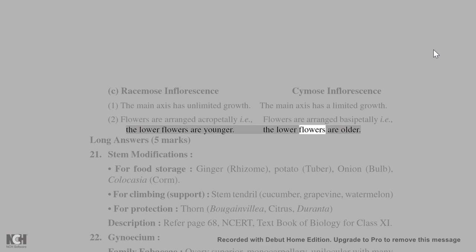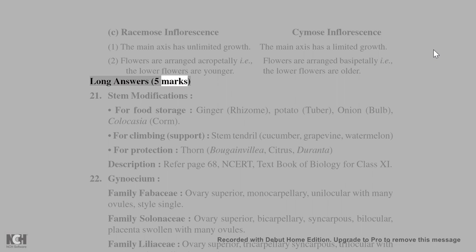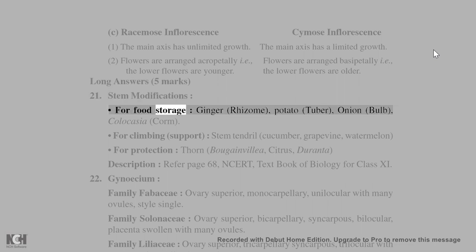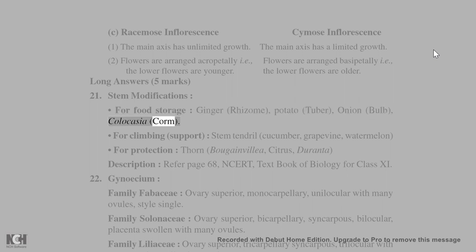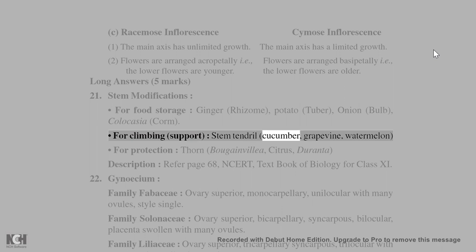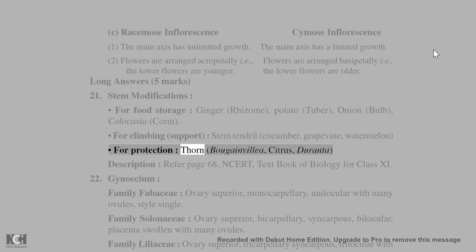Long answers (5 marks): 21. Stem modifications — for food storage: ginger (rhizome), potato (tuber), onion (bulb), colocasia (corm). For climbing/support: stem tendrils of cucumber, grapevine, watermelon. For protection: thorns in bougainvillea, citrus, duranta. (Description: refer page 68, textbook of biology for class 11.)